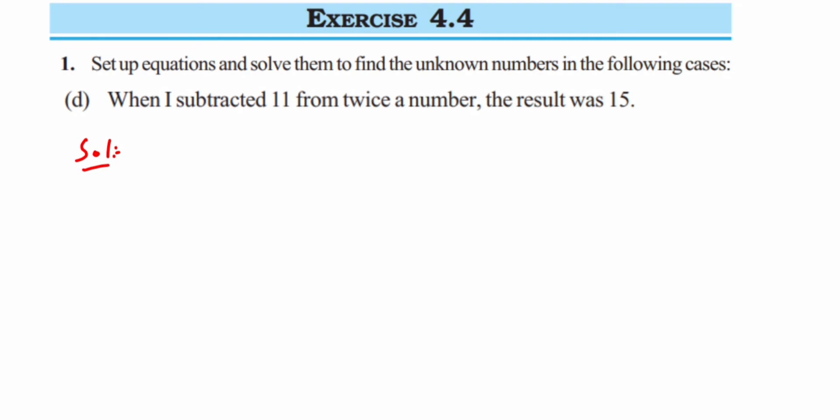So let us assume at first: let the number be x. This is the number which we have assumed to be x. Now, what are they saying? When I subtracted 11 from twice a number. Twice a number means it's double of a number, or two times a number, so it is 2x.